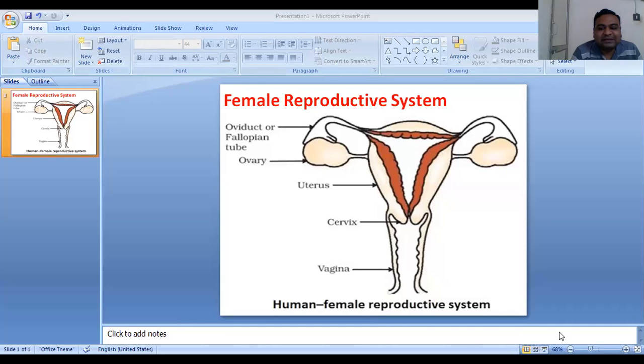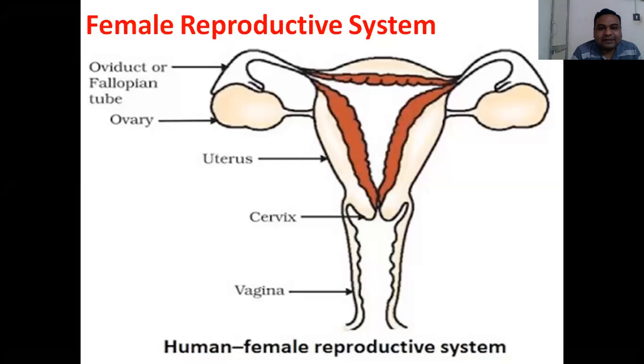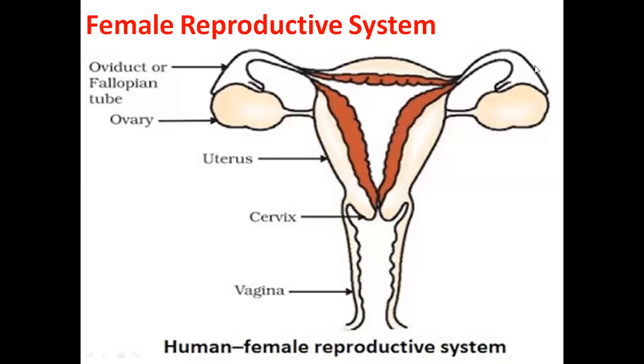So those who are biology lovers, those who are loving anatomy — that is human anatomy — stay with this video till the end. So you can understand the basic concept about the female reproductive system. Let us begin with it. Here I am sharing you the screen in which the female reproductive system has been shown, so you can see it and understand in detail.